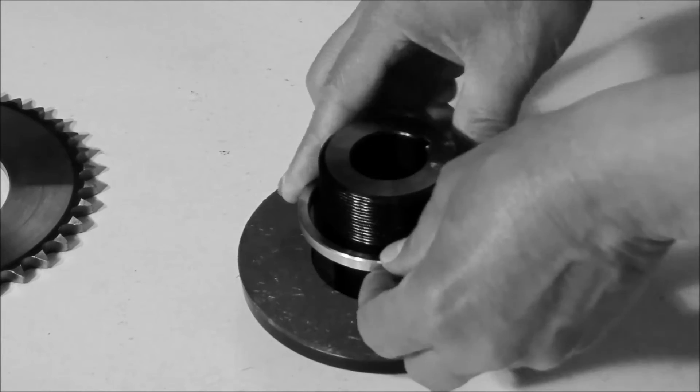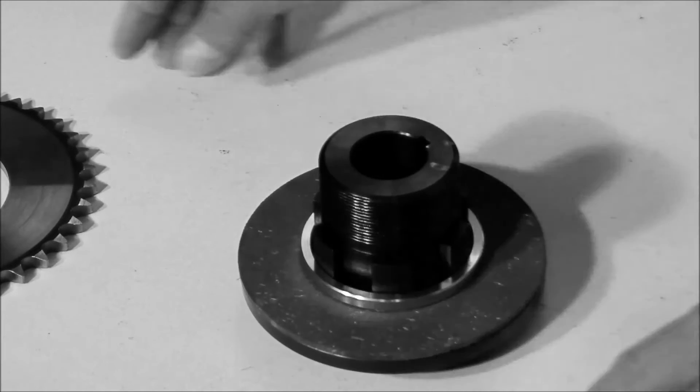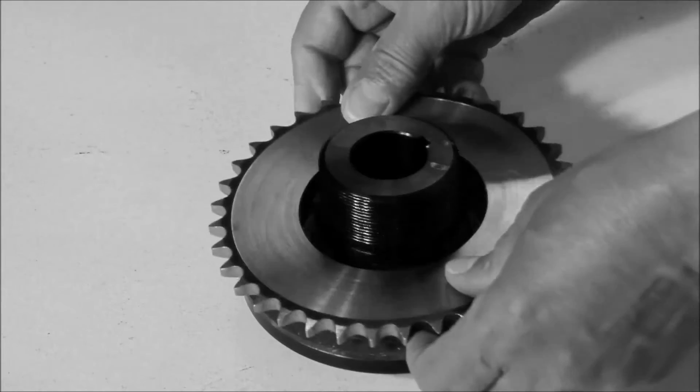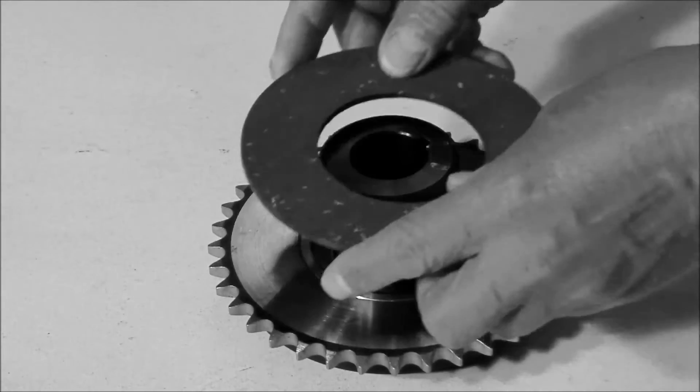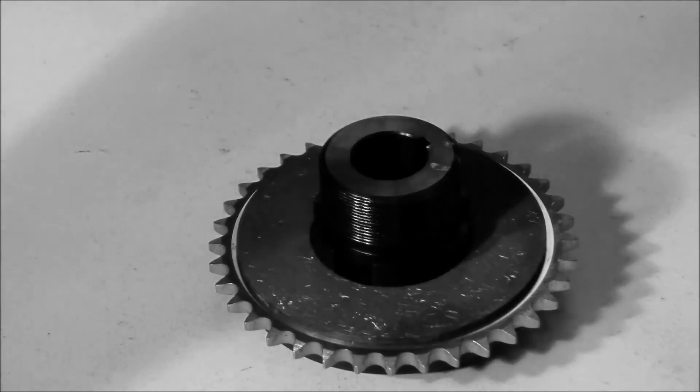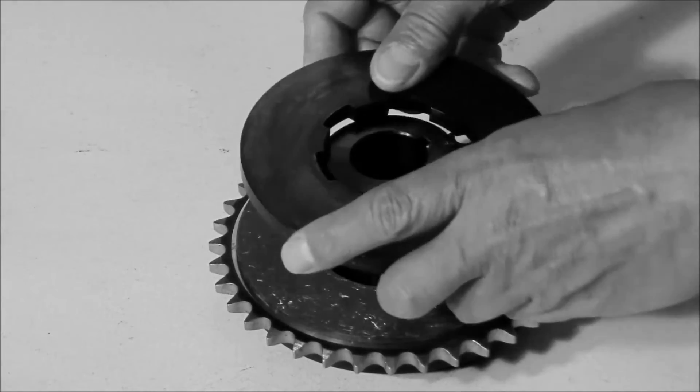We'll put the bushing on there, then the sprocket, then the other friction disc, the other pressure plate.